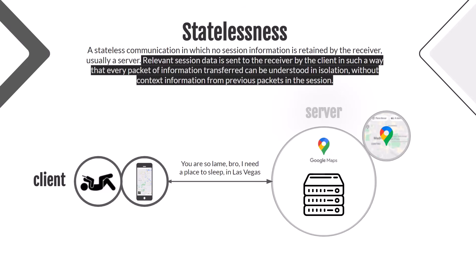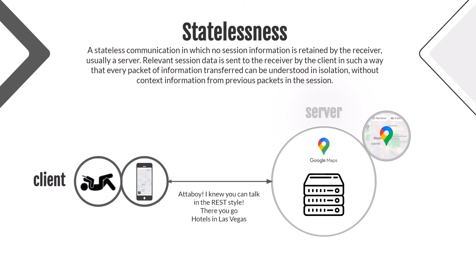The client has no choice but to send the appropriate question. As stated in the definition, relevant data is sent by the client in such a way that every packet of information transferred can be understood in isolation, without context information from previous packets in the session. So the client specifies the location again. The server understands because it has all the information needed, and sends the hotels in Las Vegas to the client. If the client sends a request in a non-RESTful format, the RESTful server will ignore it, because it forgot the client the moment it sent the hotels.